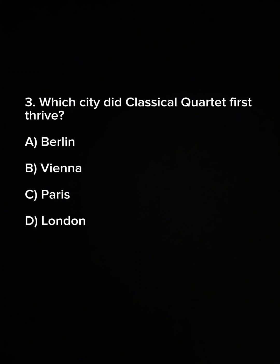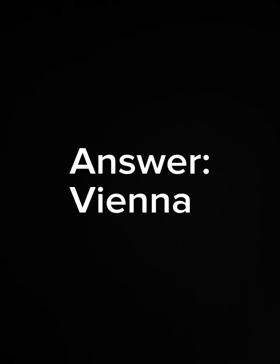Question 3. Which city did the classical quartet first thrive? A. Berlin. B. Vienna. C. Paris. D. London. Answer: Vienna.